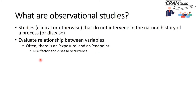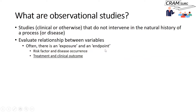For example, if you're looking at a study evaluating the relationship between smoking and lung cancer, smoking is the risk factor or exposure and lung cancer — the occurrence of disease — is the endpoint. Similarly, if you're looking at studies evaluating relationships between specific treatments and clinical outcomes, the treatment becomes the exposure and the clinical outcomes, which can be death, recurrent disease, or success of treatment, become the endpoint.